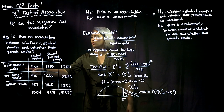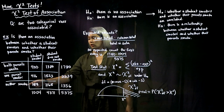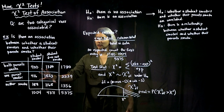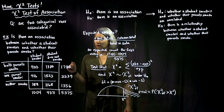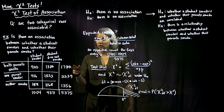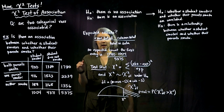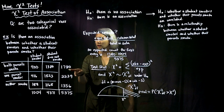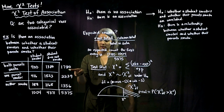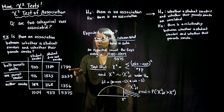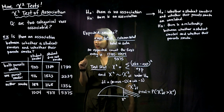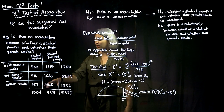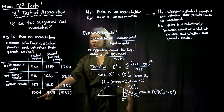The parents could have both parents smoking, one of the parents smoking, or neither of the parents smoking — those are the three rows. We can then find the row totals and the column totals. For example, in this dataset, 1,780 of these students have both of their parents smoking.